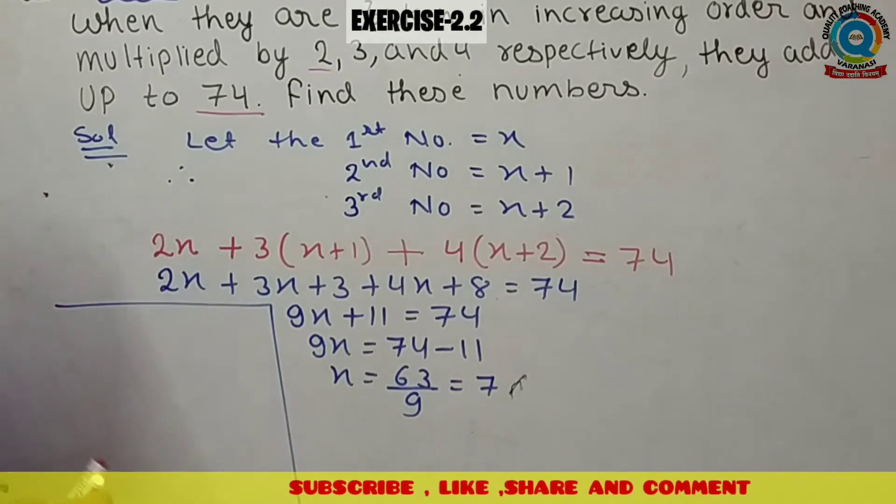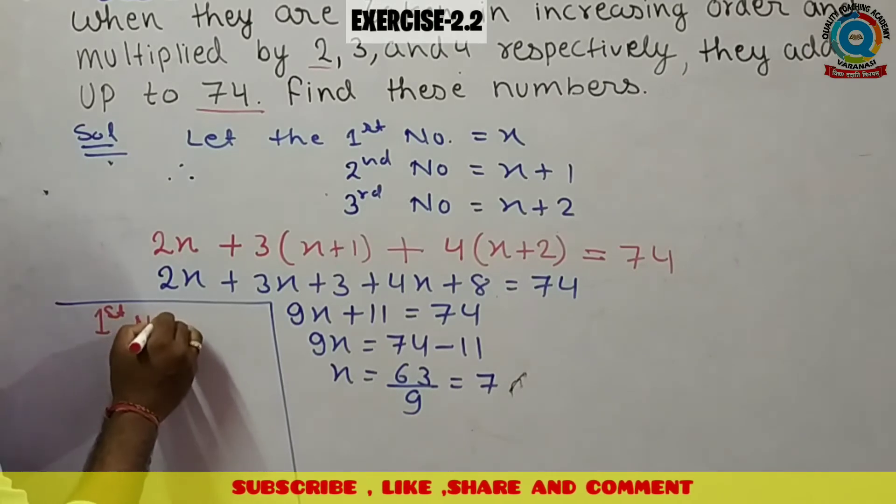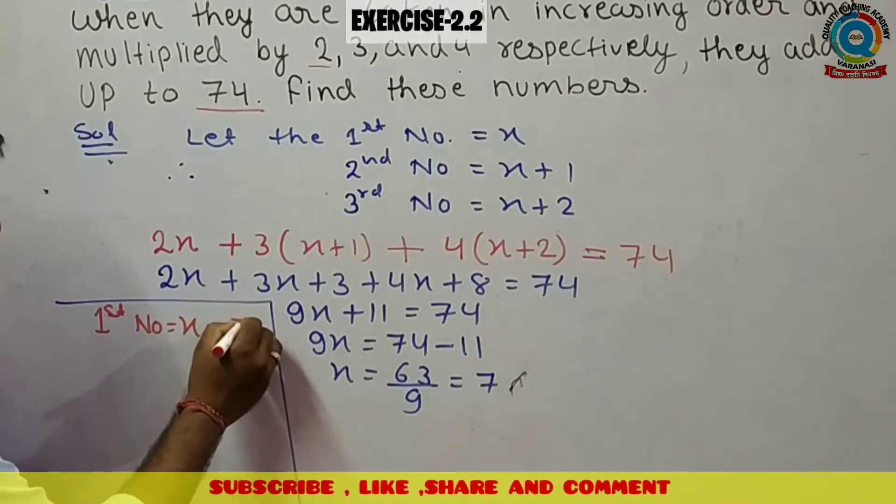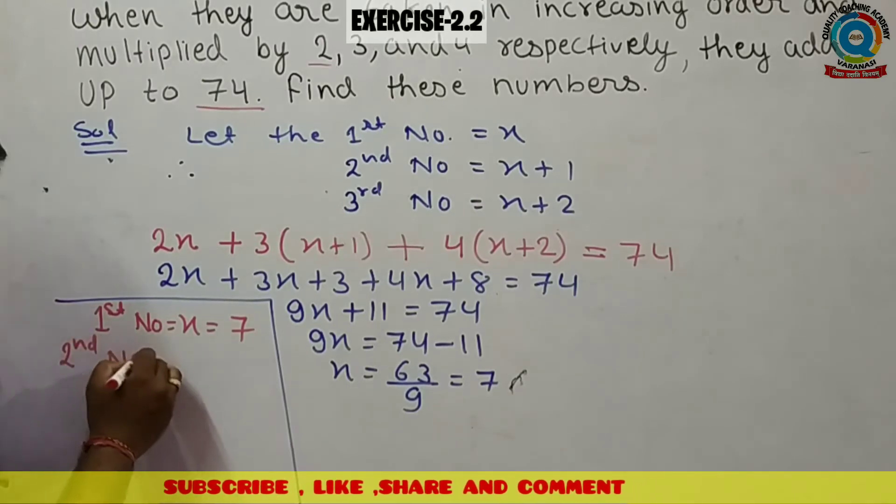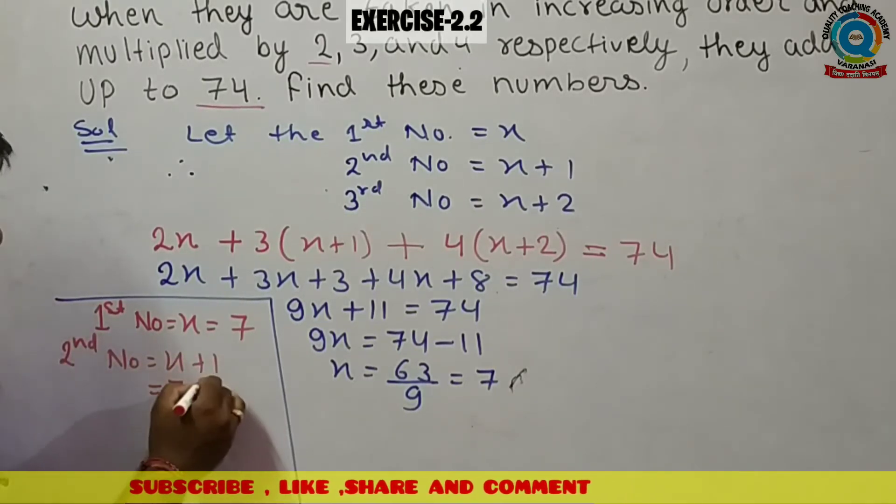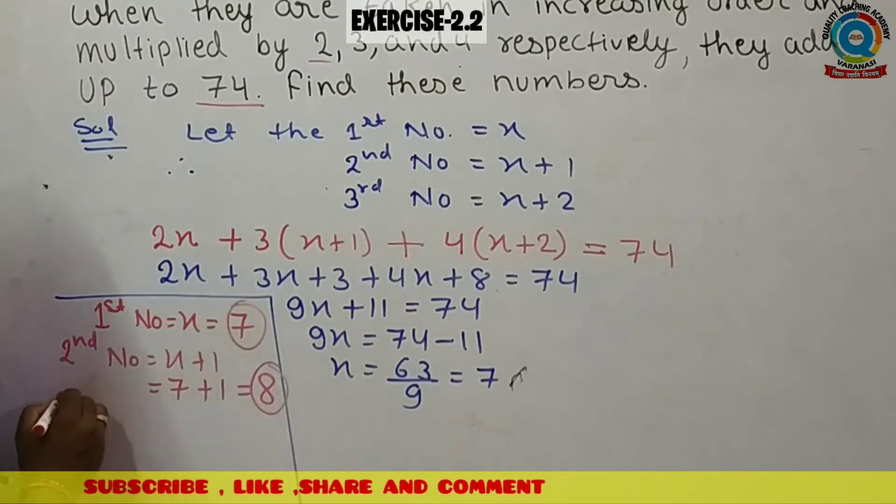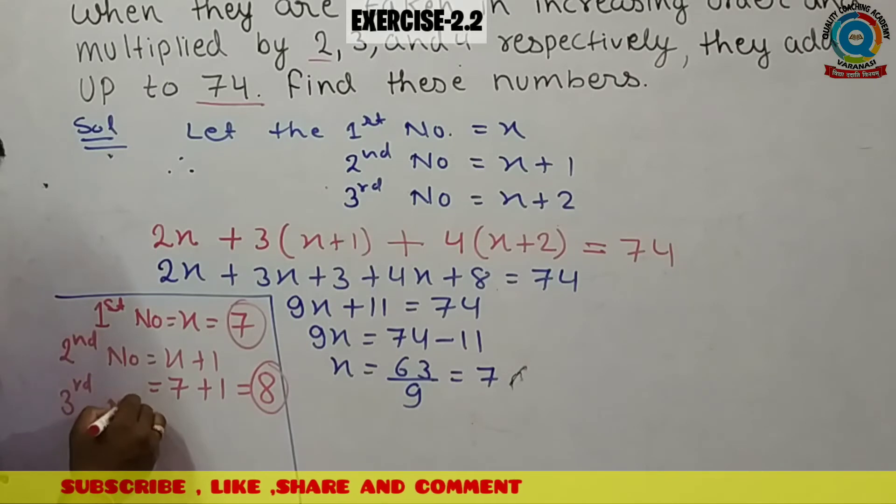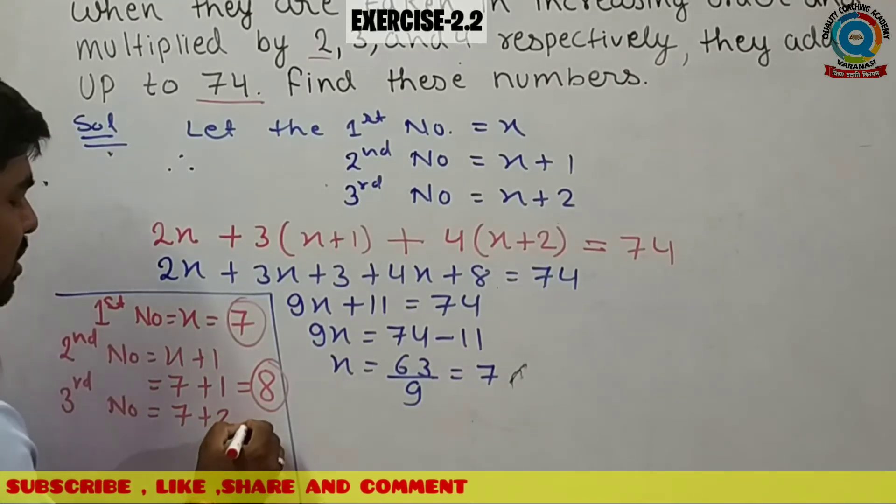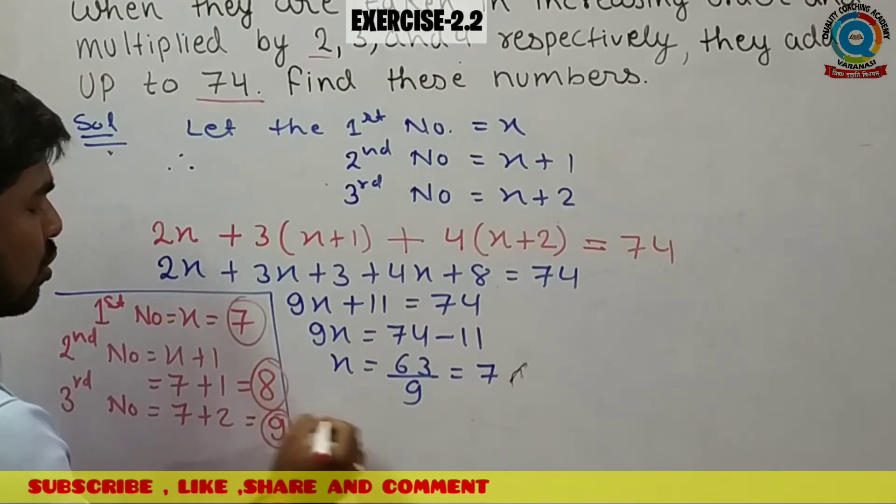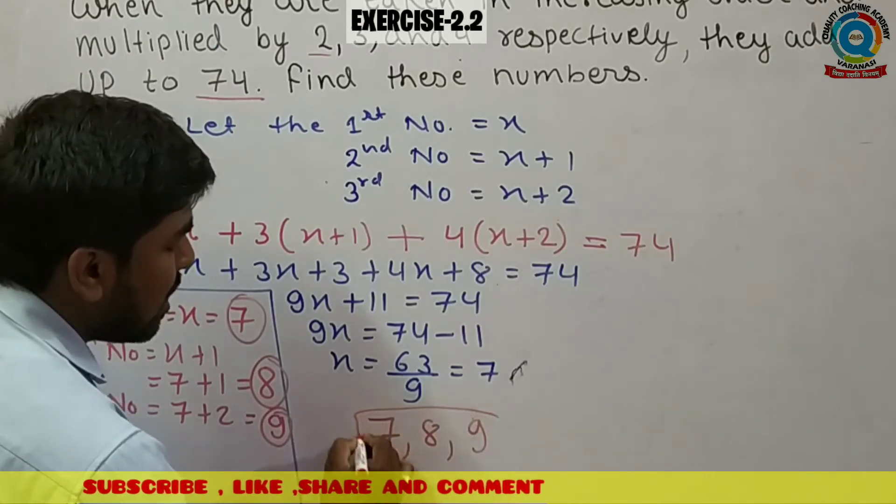Ab kya nikalna hai? Aapko numbers find karne hai. First number jo hai, x hai, x is equals to 7. Second number aapka kya hai? X plus 1 hai, its means 7 plus 1, equals to 8. Third number hai 7 plus 2, yianni x plus 2 is equals to 9. Mere answer kya ho jayenge? 7, 8 and 9.